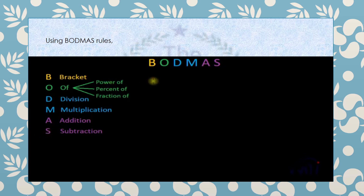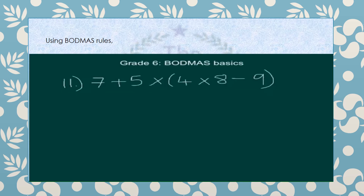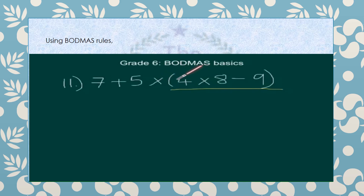Off can refer to powers, like 2 to the power of 2 or 4 to the power of 2. So let's go through a BODMAS example step by step. The B in BODMAS stands for brackets, so the first thing we need to do is focus on what's inside the brackets. Within those brackets we have two operations: a multiplication and a subtraction. In BODMAS, multiplication comes before subtraction, so we do that multiplication first — 4 times 8 is 32, minus 9.